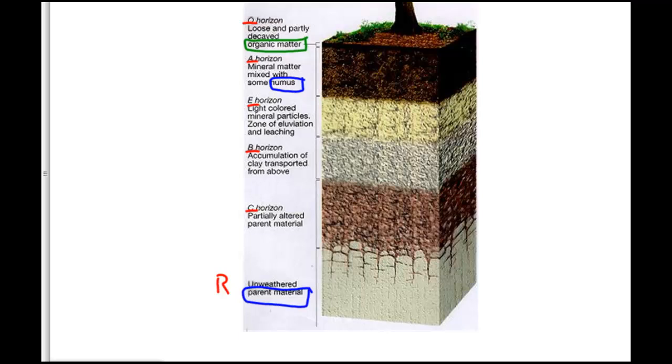So each of these letter designations - O, A, E, B, C, and R - is going to have a typical characteristic. This is going to be a generalized model of a soil profile. From this generalized model, we're going to see if we can apply that to the specific data we collected in our soils. We've created our little mini profiles. Can we apply this model to the data,